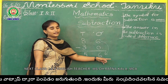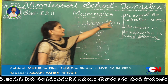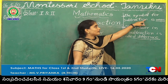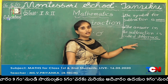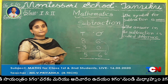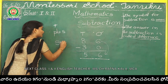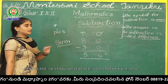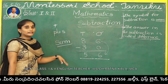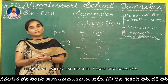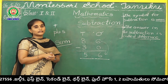Understood, children? This answer is called difference. So what is the symbol for subtraction? Minus. The answer in subtraction is called difference. The symbol for addition is plus, and the answer in addition is called sum. These two belong to addition and this one is subtraction — these are very very important, children. Practice additions and subtractions. Homework will be given for this week — complete it, put the date and write neatly. Thank you.